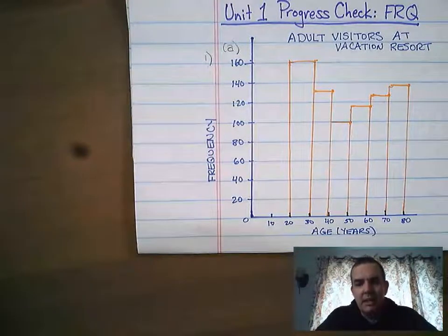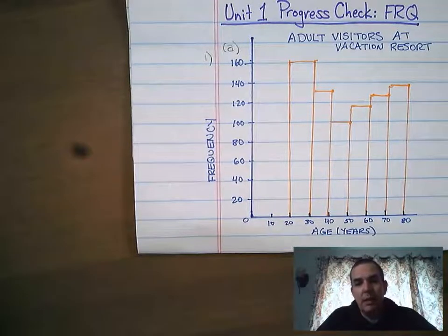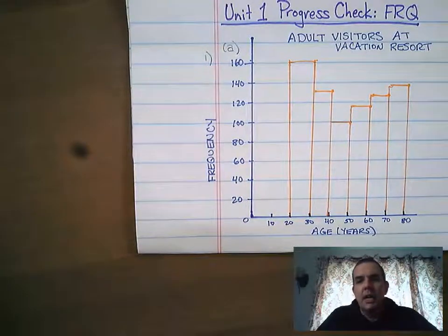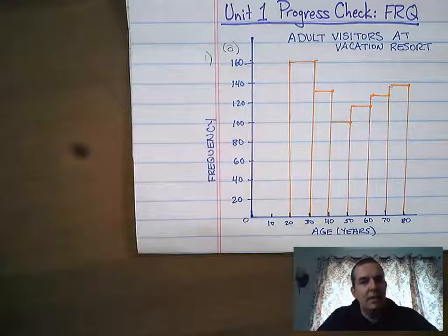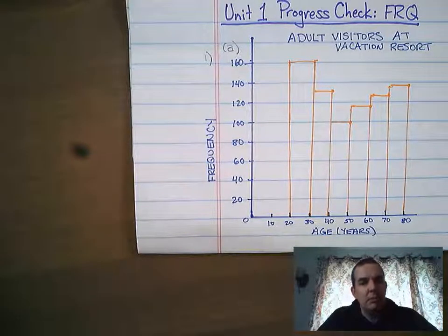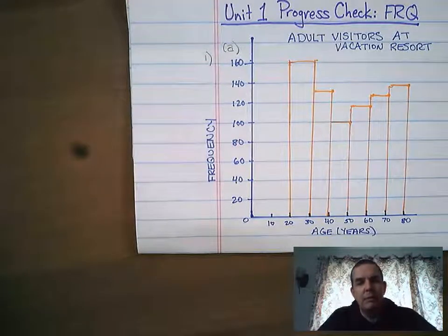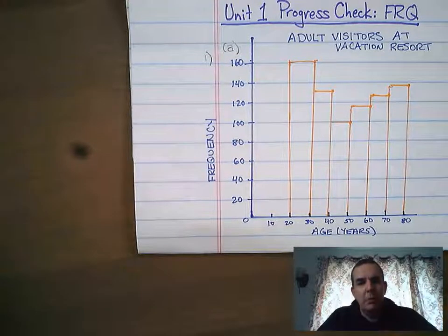So no, this is not an approximate normal distribution because, while it may be roughly symmetric, it's not mound-shaped — it doesn't have the greatest amount in the middle of the distribution; there's more data at the extremes. That would be what they would be looking for in terms of that response.